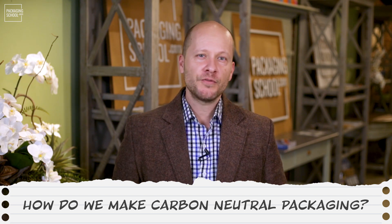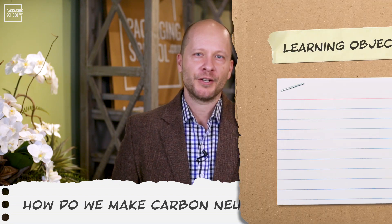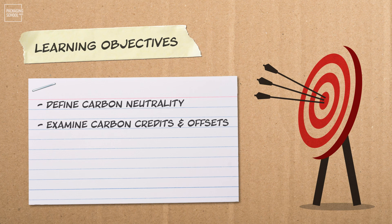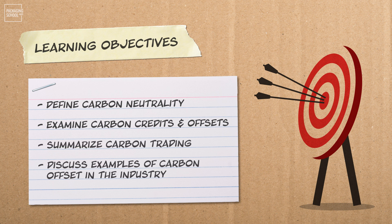By the end of this short lesson, you're going to be able to define carbon neutrality, examine carbon credits and offsets, summarize carbon trading, and discuss examples of carbon offset in the industry.